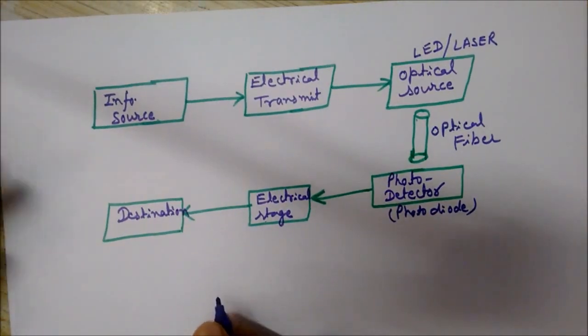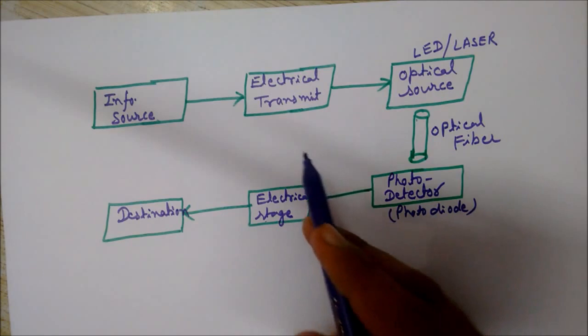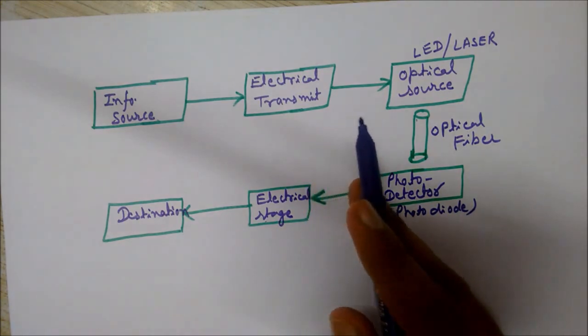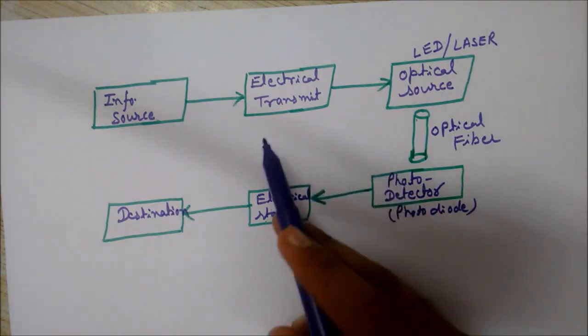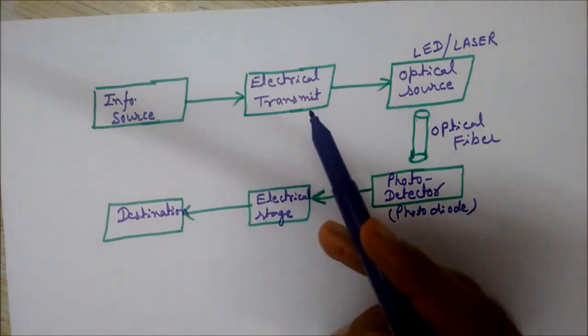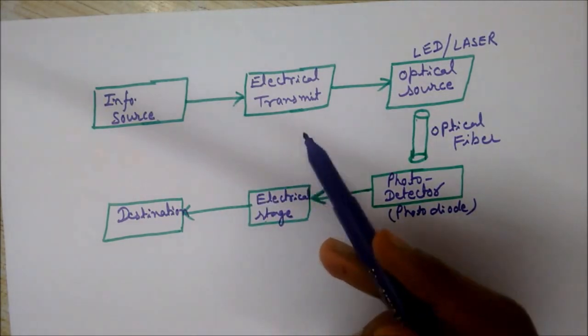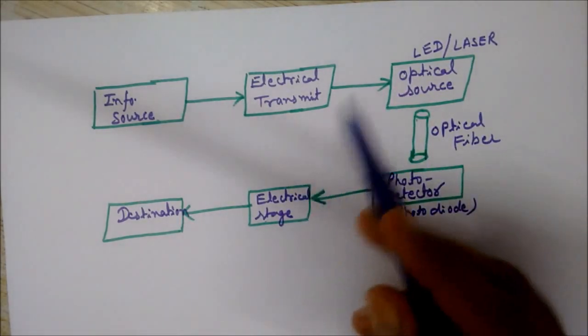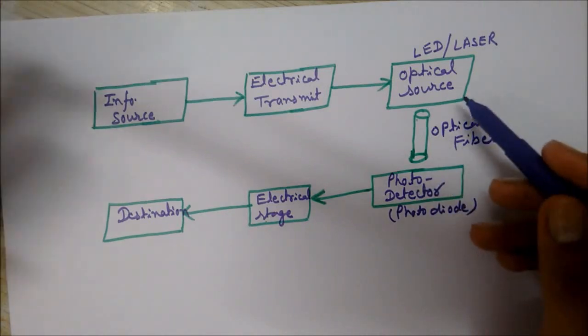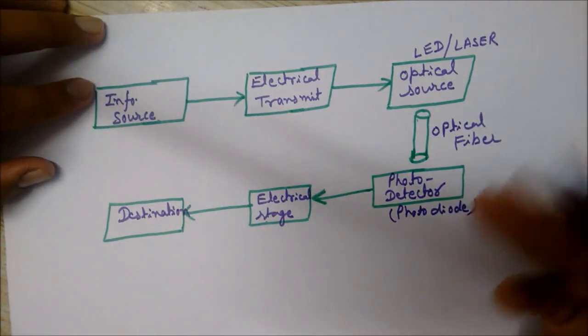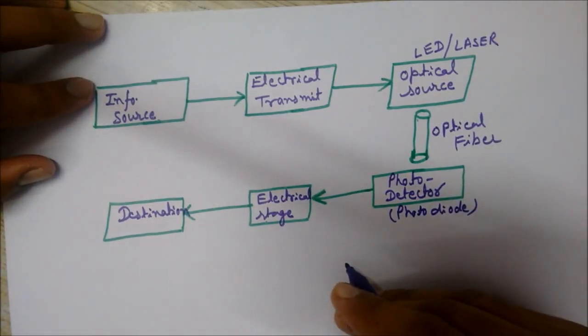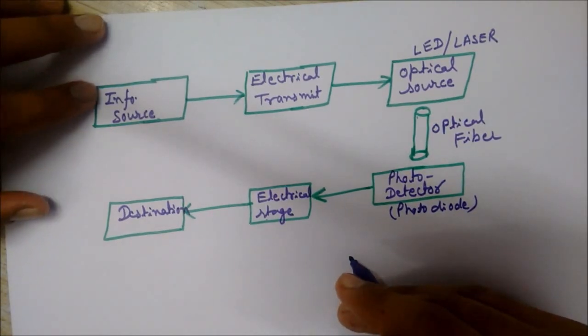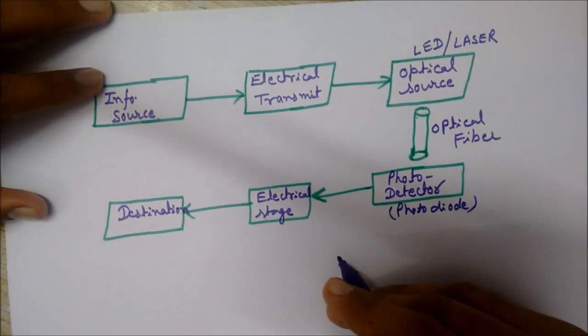First of all, let me explain it to you with the help of an easy example. Suppose when someone speaks, it creates some signals. This signal is converted into electrical signal, and then the electrical signal into light signal using lasers or LEDs. Then at the receiving end, the signals are again converted into sound signal using transducers.